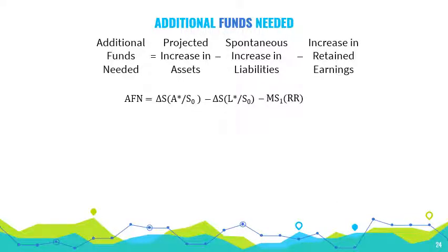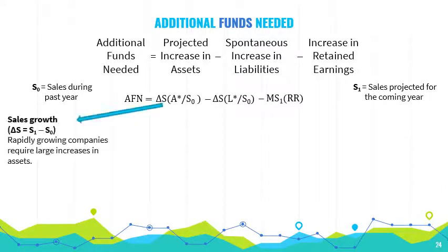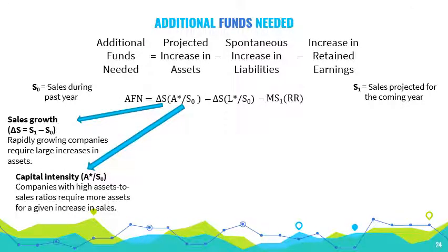Take note that S-sub-0 stands for the sales during the past year, while S-sub-1 stands for the sales projected for the coming year. The sales growth, denoted as delta S, is computed as the difference between S-sub-1 and S-sub-0. Generally, the higher the expected sales growth, the greater will be the required increase in assets for every unit of sale.